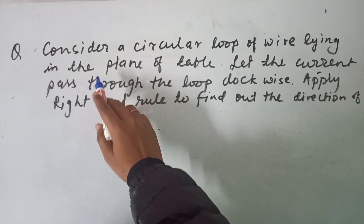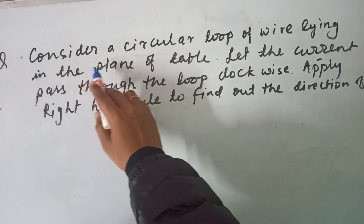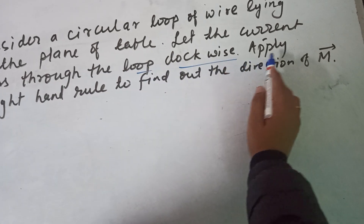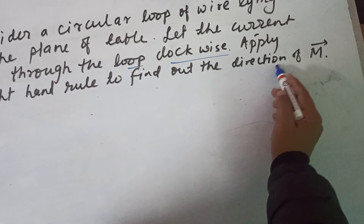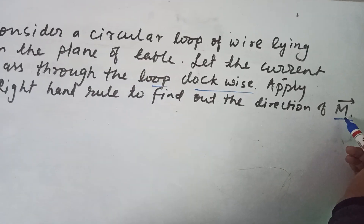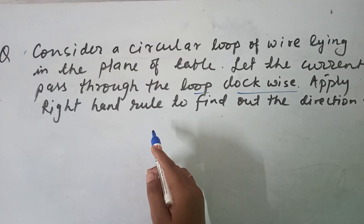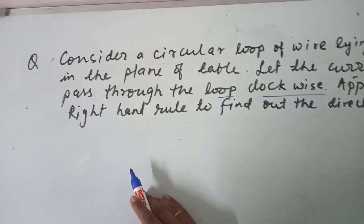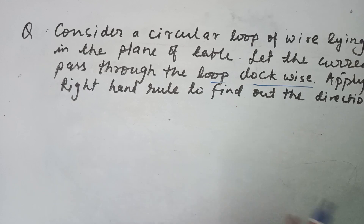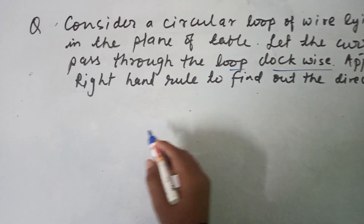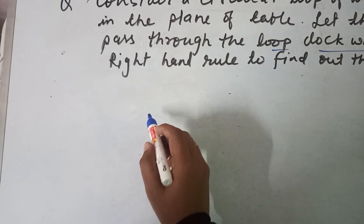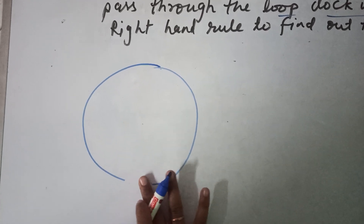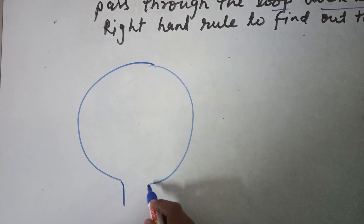So friends, today's video question is: consider a circular loop of a wire lying in the plane of a table. Let the current pass through the loop clockwise and apply the right-hand rule to find out the direction of the magnetic field. The question is also asking us to find the direction of the magnetic field inside and outside the plane. So suppose there is a table, this is the plane of the table, and there is a circular wire like this, and since current passes through the loop there must be some circuit over here.